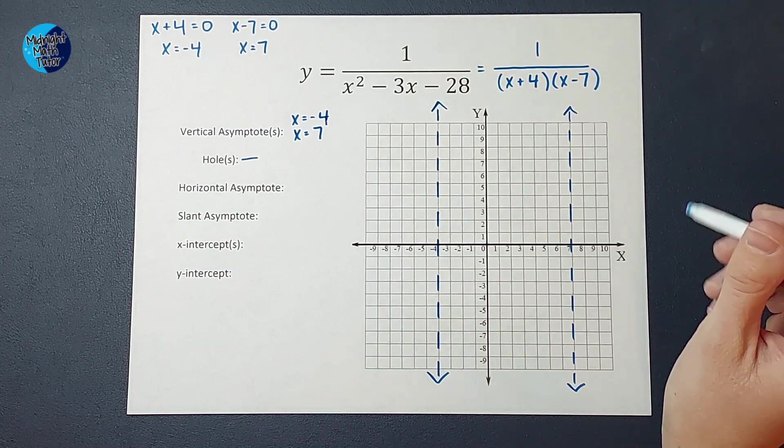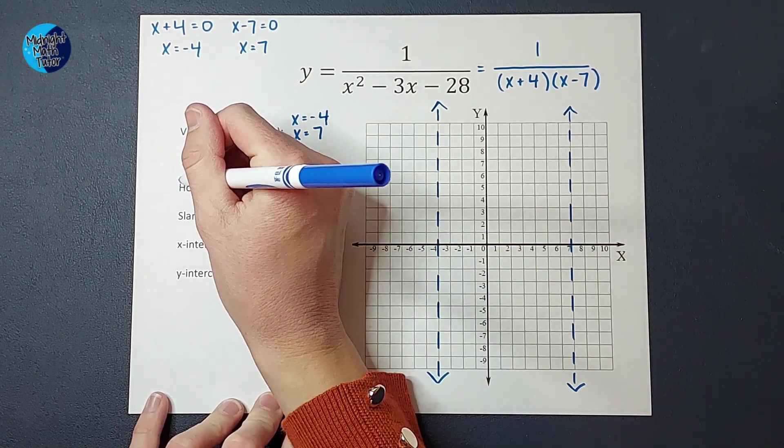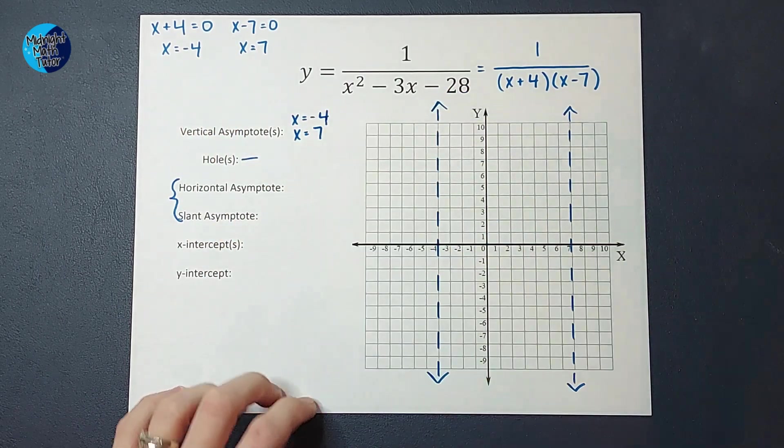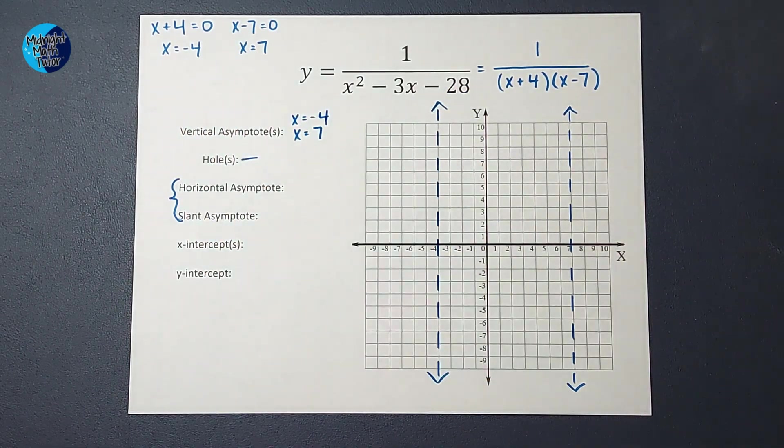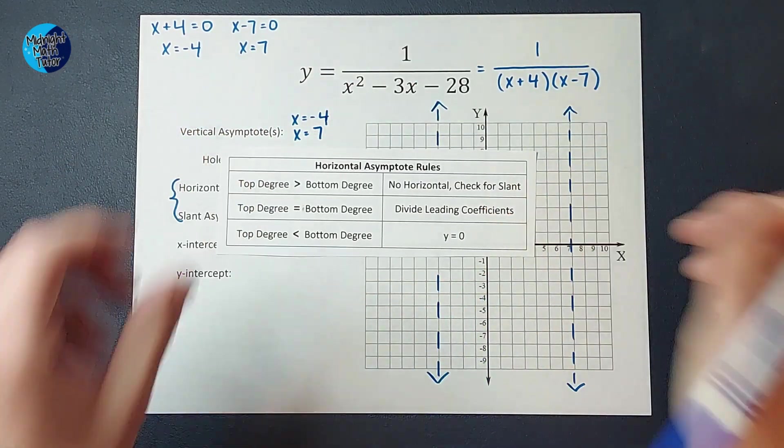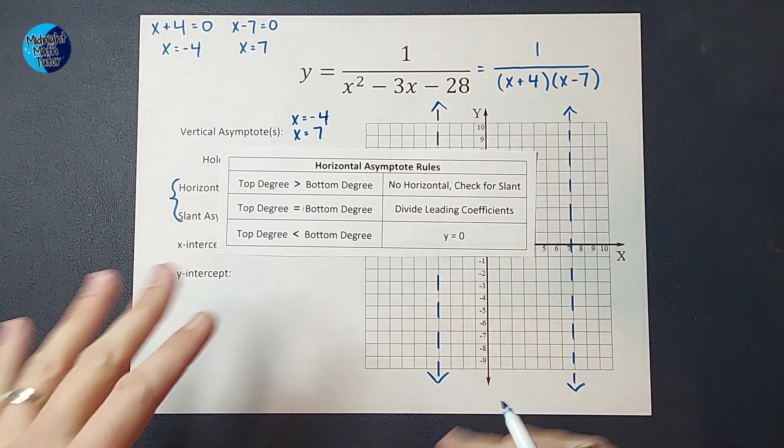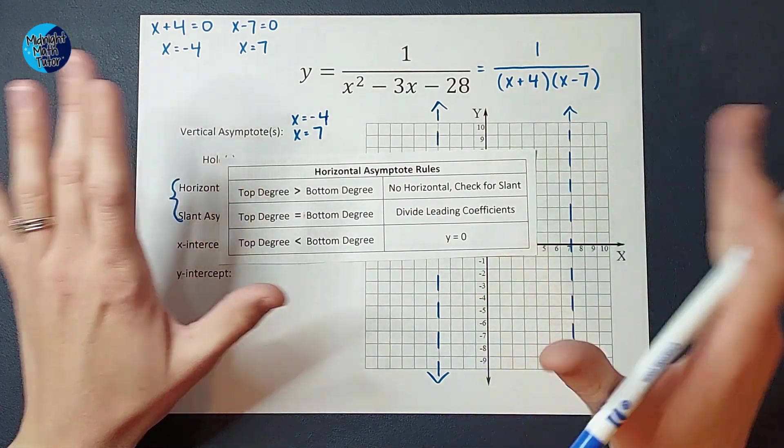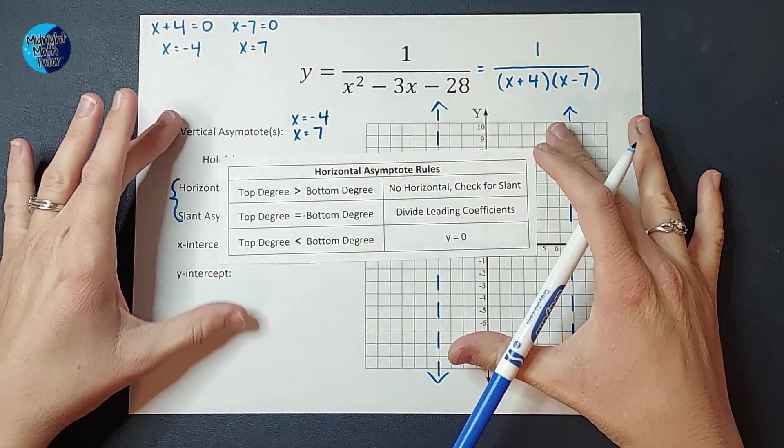The next thing I'm going to do is figure out my horizontal or slant asymptote. You won't have both. And to find these, we follow some rules. Yes, just give me the rules, and I'll follow them. They're there. So what you need to know is these did not just come out of thin air. Someone didn't just make them up. They have a reason why they're the rules. If you want to know why, I'll link a video in the corner.